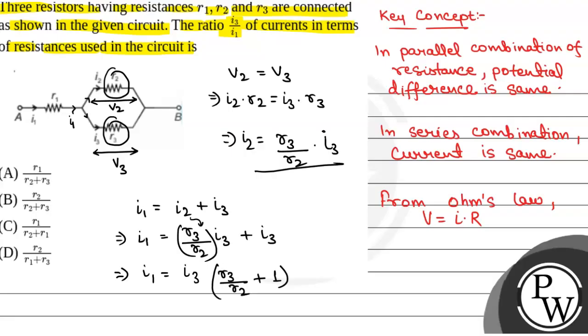So we have to find the ratio of I3 by I1. So that will be equal to 1 by R3 by R2 plus 1. And on solving this we will get this as R2 by R2 plus R3.